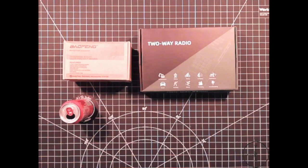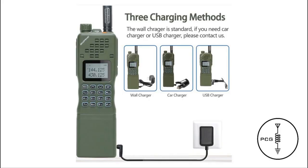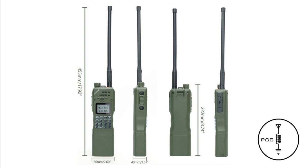One of the things I like about this radio is it appears to have three charging methods via wall charger, car charger, or USB. It's also noticeably larger than the UV-5R, and measures approximately 17 inches from the base of the radio to the antenna, and it's approximately 3 inches wide.